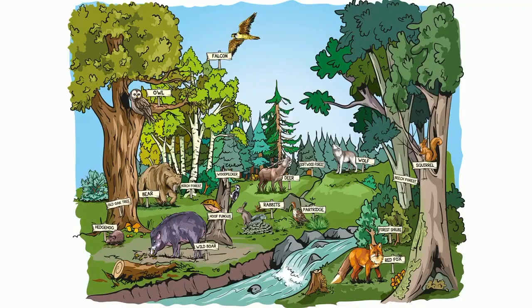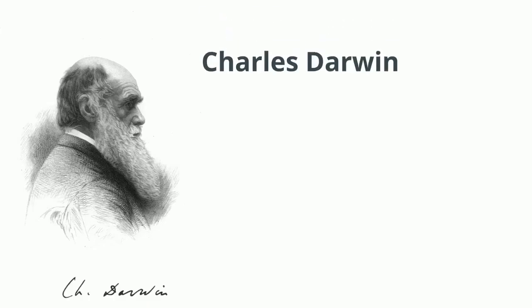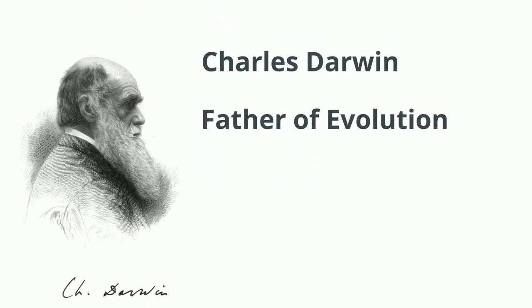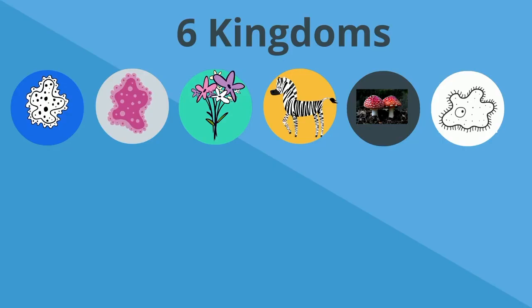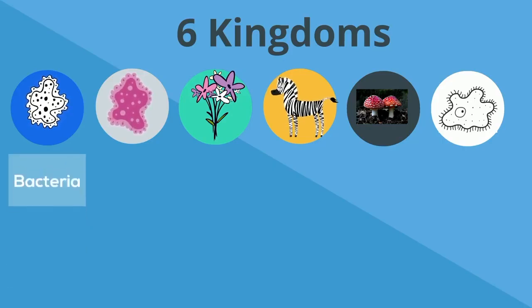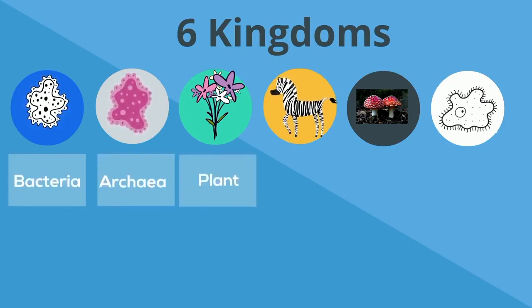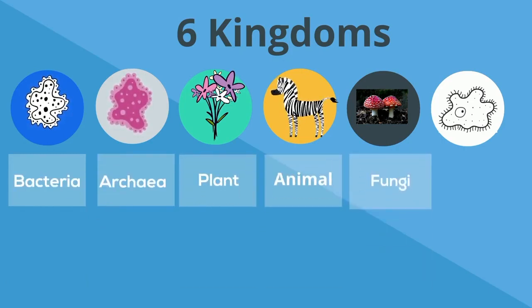As a result, the world has a tremendous variety of life. Charles Darwin proposed the theory of evolution to explain this variety of life. Six kingdoms of life include bacteria, archaea, plant, animal, fungi, and protists.